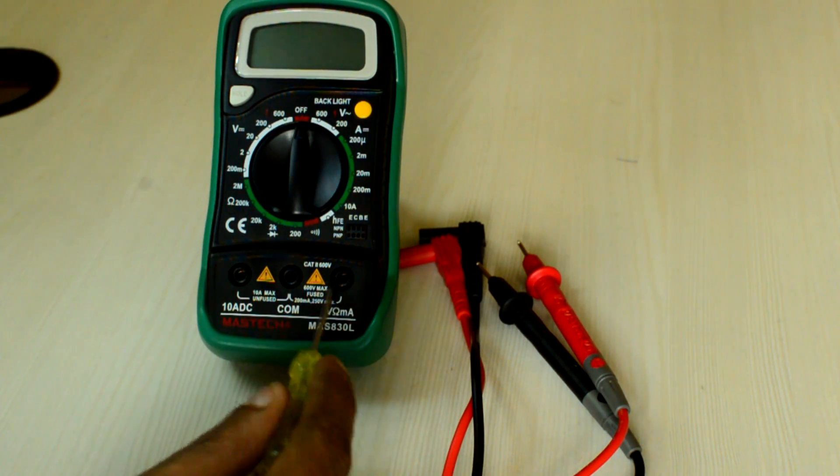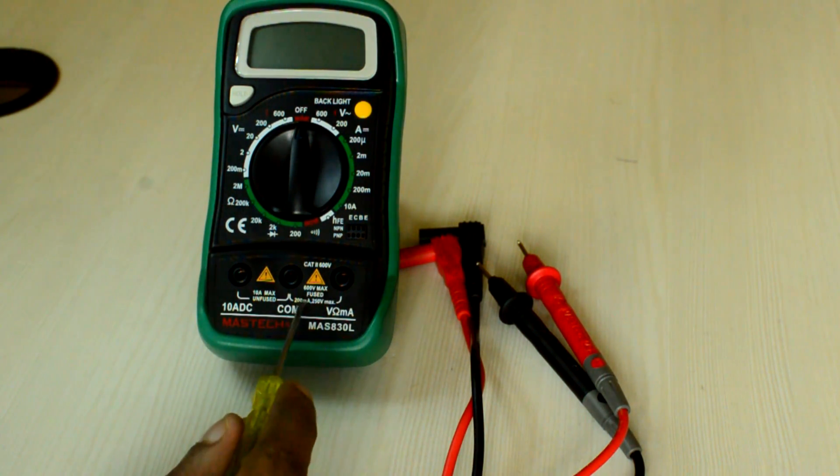When you connect the red cable to the right, you should make sure that the current is not more than 200mA, else your fuse will blow off.